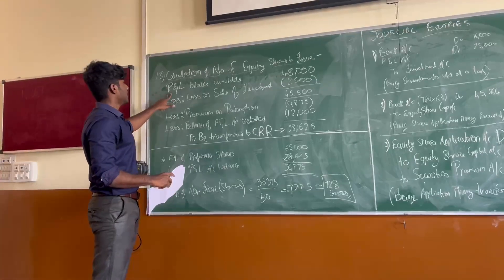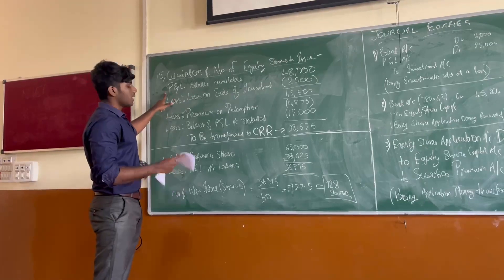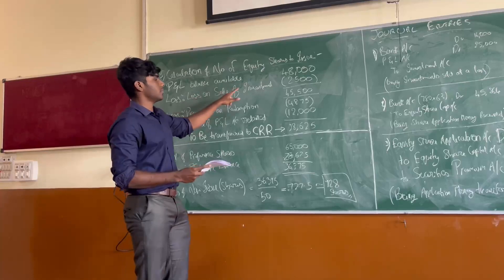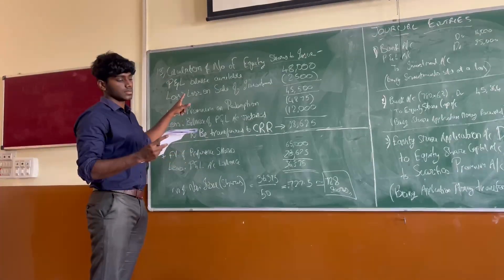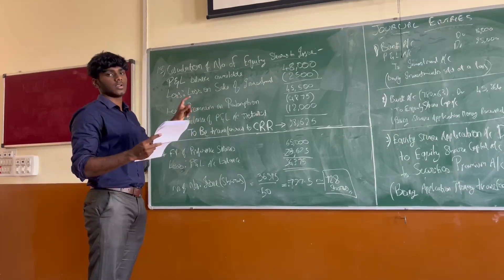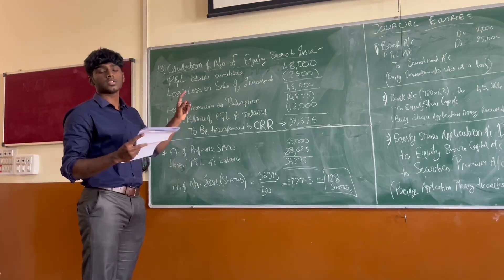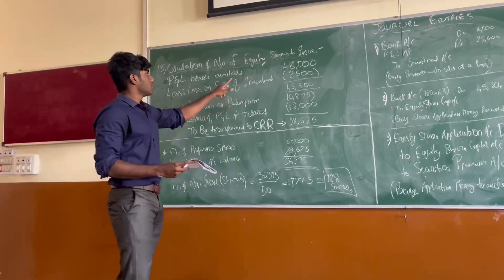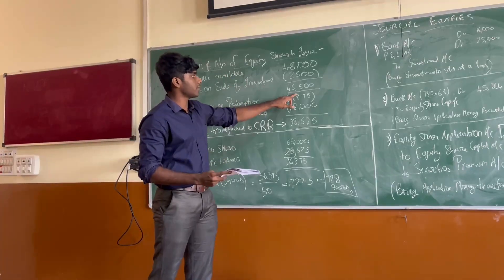First, we take the general reserve balance from the balance sheet. In our case, the general reserve is the Profit and Loss account, which has a balance of 48,000. We then deduct the loss incurred from the sale of investments, which was 2,500, giving us a total available balance of 45,500.